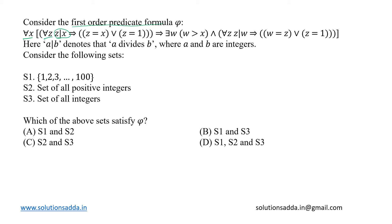z divides x implies that either z equals x or z equals one, which means if any number is dividing x, then it will either be x itself or it will be one. So this particular part simply implies that x is a prime number.